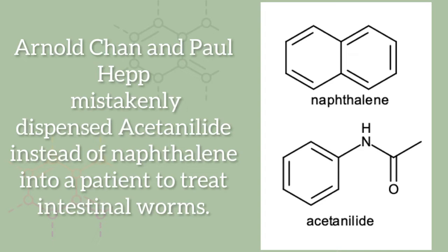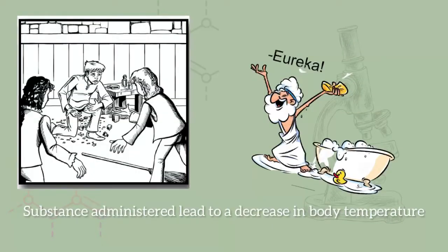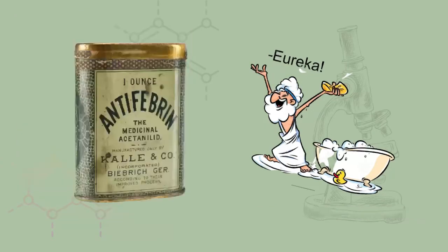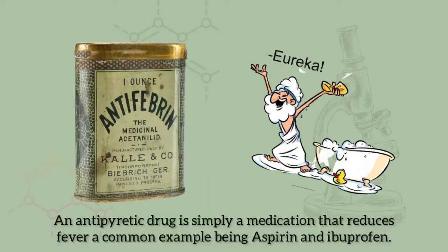mistakenly dispensed acetanilide instead of naphthalene into a patient to treat intestinal worms. They however noticed that the drug substance, instead of eradicating the worms, rather led to a decrease in body temperature. The two young doctors quickly published their findings, and acetanilide was introduced on the market under the brand name Antifebrin as an antipyretic drug.